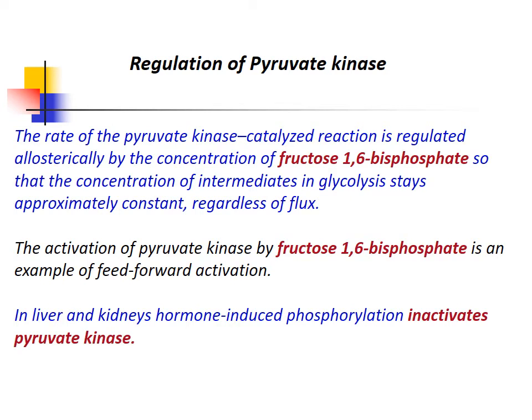Regulation of pyruvate kinase: The activation of pyruvate kinase by fructose-1,6-bisphosphate is an example of feed-forward activation, helping to keep the concentration of glycolytic intermediates approximately constant regardless of flux. In the liver and kidneys, hormone-induced phosphorylation inactivates pyruvate kinase.